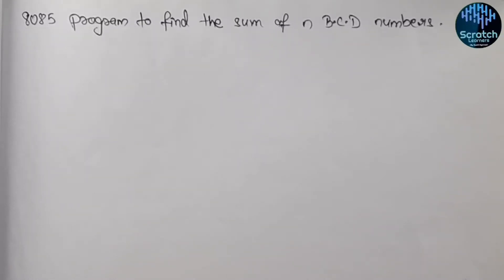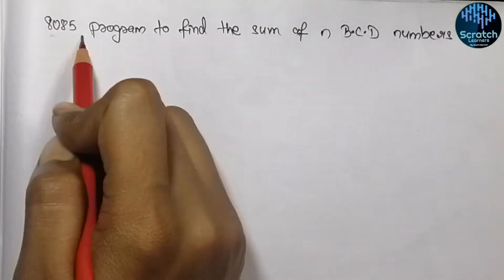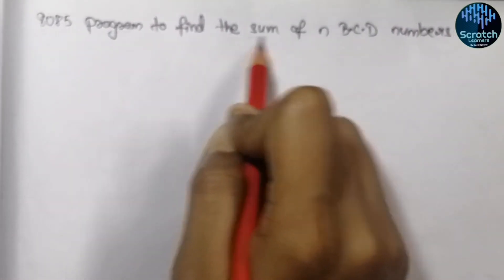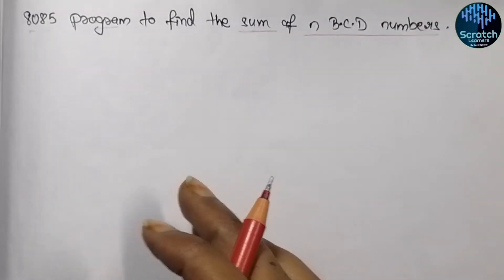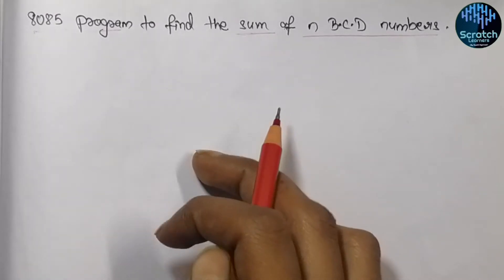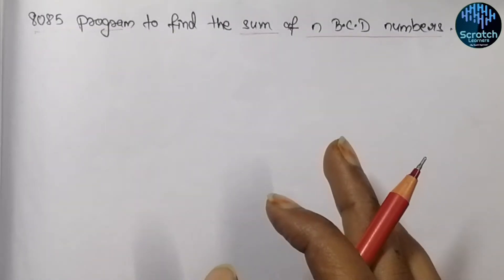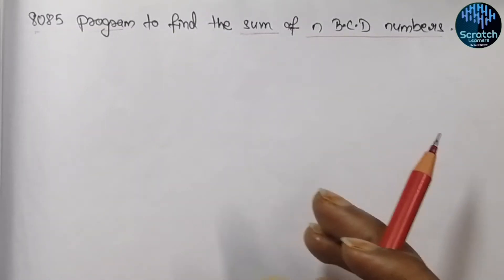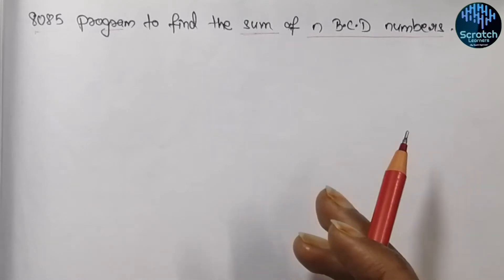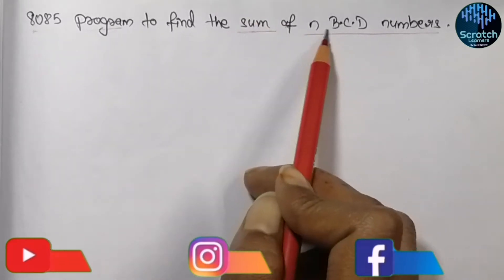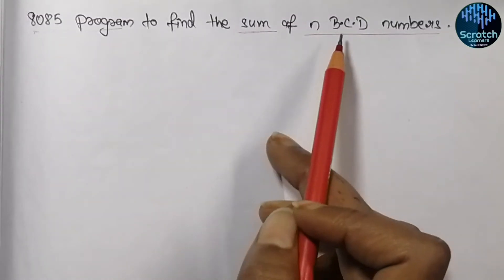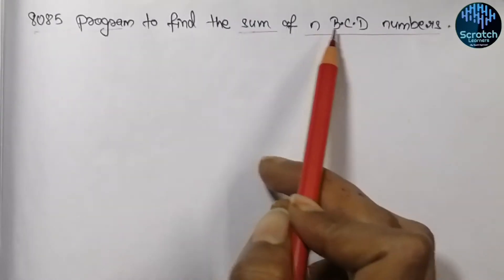Hello guys and welcome to our YouTube channel Scratch Learners. Today we will see the 8085 program to find out the sum of N BCD numbers. I hope you all know how to find the sum or addition of two or more numbers in general — we have seen that video for the 8085 microprocessor — but the difference here is that we need to find out the sum of BCD numbers.